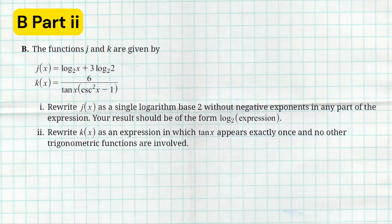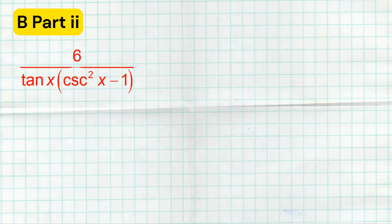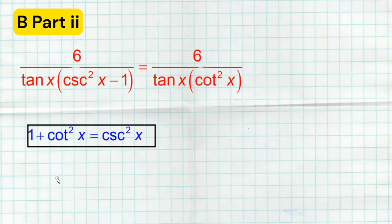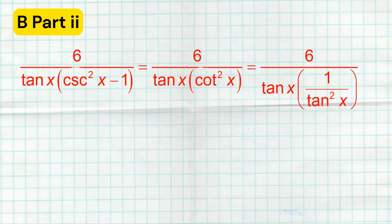Now, let's talk about k. They want us to rewrite k as an expression in which tangent of x appears exactly once and literally no other trig functions in the problem. So we know we're going to be good when we have a tangent of x and no other trig functions. This is actually kind of a tricky one, so let's pay attention. So the first thing I'm going to do is change cosecant squared minus one to cotangent squared. Now, what allowed me to do that? That's one of the Pythagorean theorems or the Pythagorean identities that you should know. One plus cotangent squared equals cosecant squared. So if I simply subtract this one over to the other side, I know that cosecant squared of x minus one is cotangent squared.